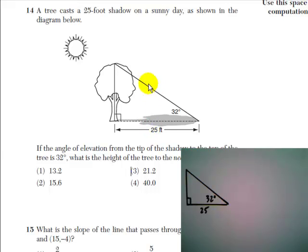Which one should we use: sine, cosine, or tangent? Well, I see I have an angle, I have an adjacent side, and what I want to find is the opposite side, which is the height of the tree.